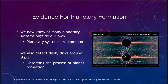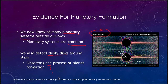Some of the keys that we now know — things we didn't know several decades ago — is that we know of many planetary systems outside of our own, and that they are quite common. We now know of thousands of planets outside our solar system; back in the mid-1980s we didn't know for sure of any. We also detect dusty disks around stars, as with Beta Pictoris. So are we observing the process of planet formation? It looks like that is a pretty good bet, because planetary systems are clearly common.